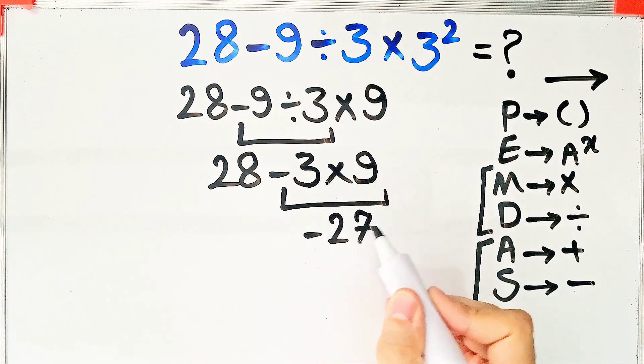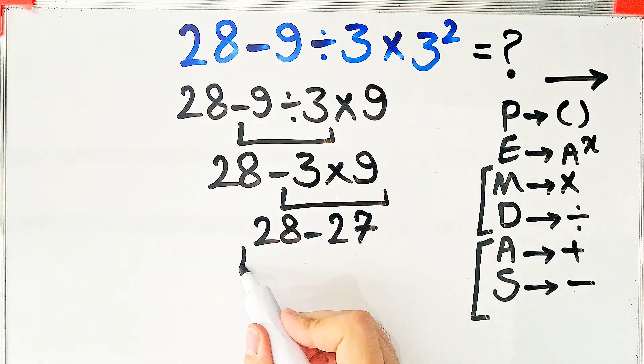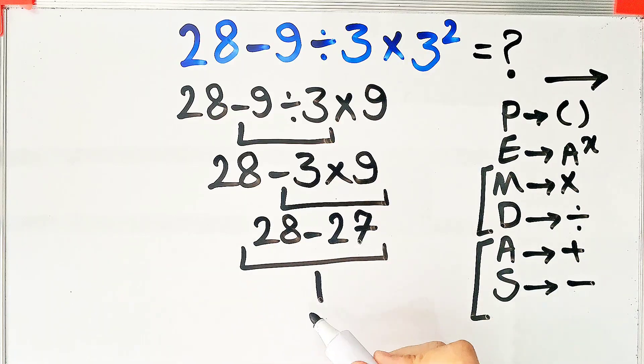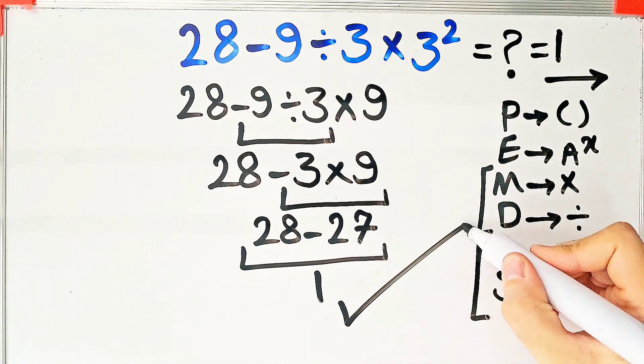Now we have 28 minus 27, which equals 1. The final answer of this question equals 1. Thanks for watching, guys. Please subscribe to the channel and leave a comment. Goodbye.